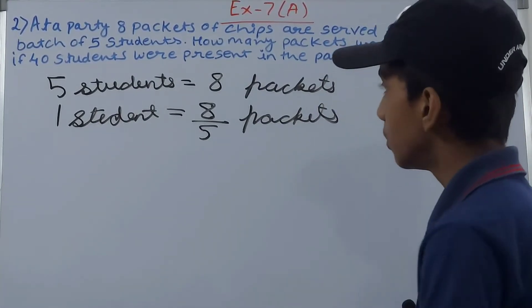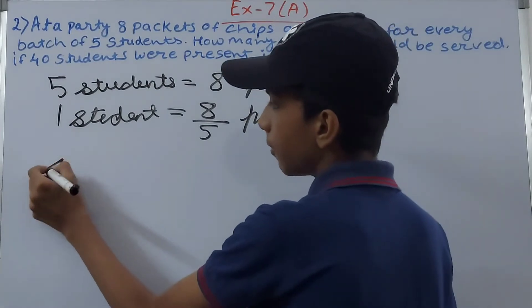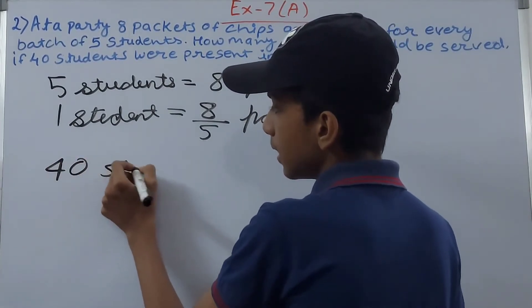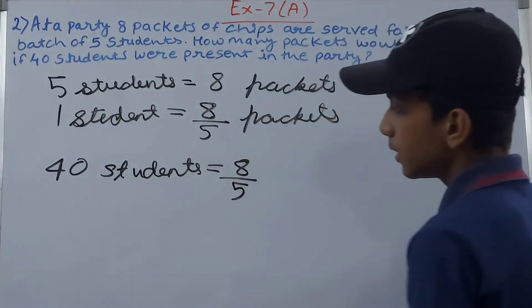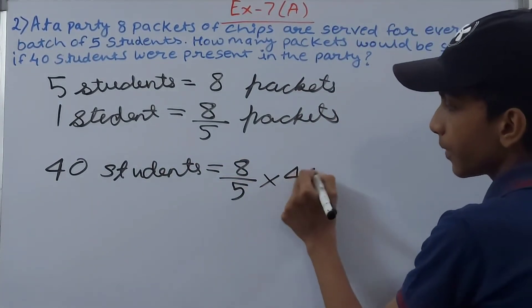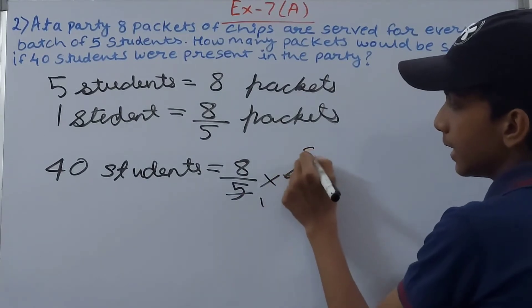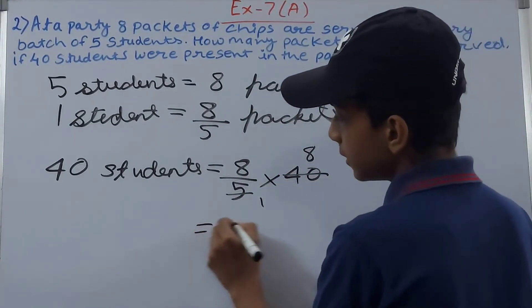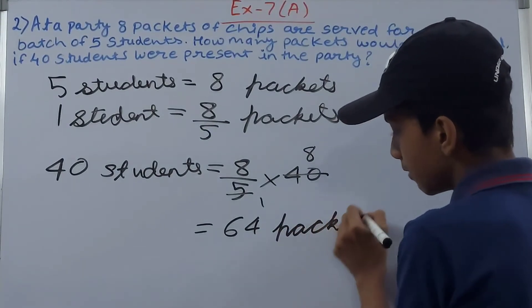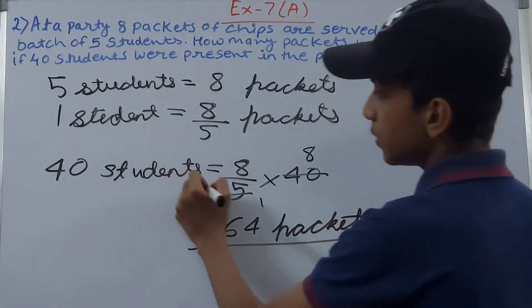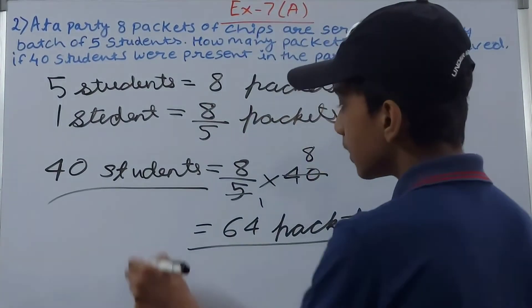Now the question is how many will be given to 40 students? So multiply this by 40. So 40 students equals to 8 upon 5, which is for one student, into 40. So one and eight here, so we'll have here 64 packets. So 64 packets will be given to 40 students if they were present in the party. So our answer becomes 64.